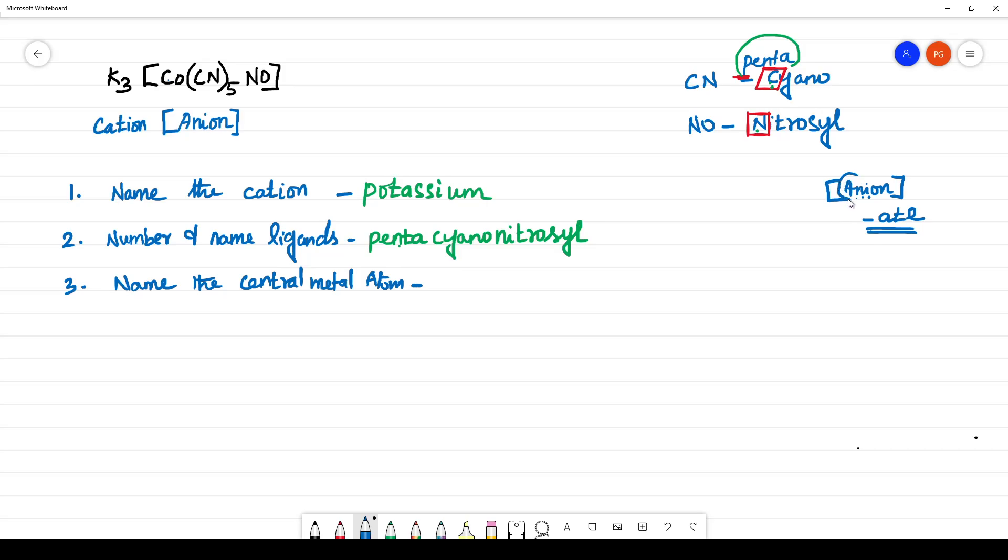If the complex is anion, remember if the complex is anion, if the complex is present inside the square bracket, the central metal atom, this is cobalt should end with 8. But if the complex is cation, the complex is cation, you have to name it normally. Here it will be cobaltate. But if the complex is cation, it will be cobalt only. In this case, the complex is anion. How to name this anionic complex in the central metal atom? That is cobaltate. You should add the suffix ATE.